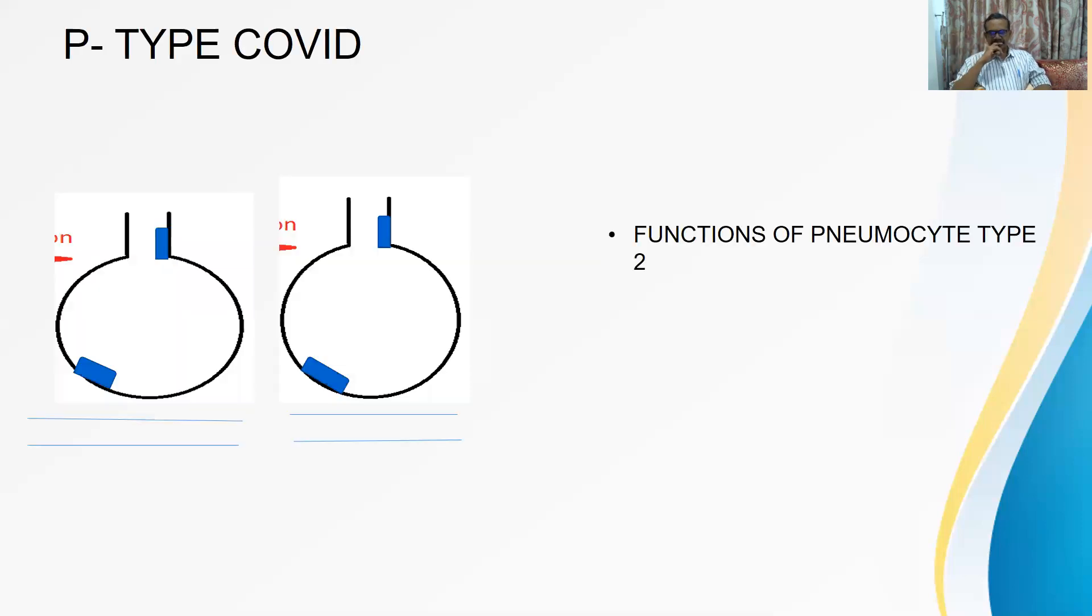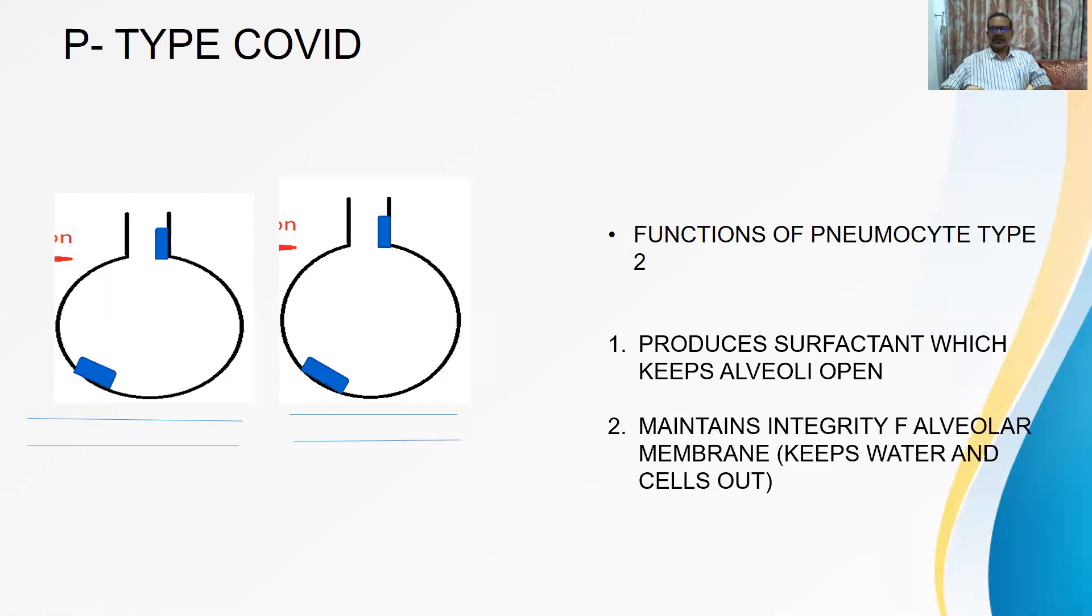Now let us go to the next part, this P-type COVID. Now here we can see again two normal alveoli. Here there are two CLARA cells. Here there are two pneumocyte type 2. Functions of pneumocyte type 2. Now we are in P-type, that is pneumocyte type. What are the functions of pneumocyte type 2? Mainly produces surfactant which keeps alveolus open. This is a well-known fact in preterm babies with RDS. That when pneumocyte type 2 is not functioning well then they go for collapse of alveolus.